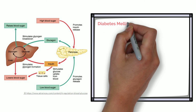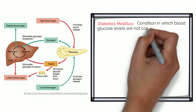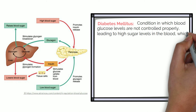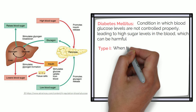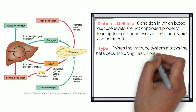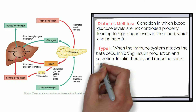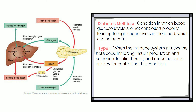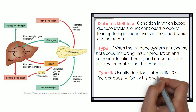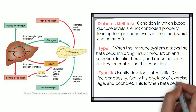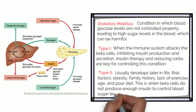Diabetes mellitus is a condition in which blood glucose levels are not controlled properly, leading to high sugar levels in the blood which can have severe impacts on the body. Type 1 is when the immune system attacks the beta cells, inhibiting insulin production and secretion; insulin therapy and reducing carbohydrates are key for controlling the condition. Type 2 usually develops later in life, with risk factors including obesity, family history, lack of exercise, age and poor diet — this is when beta cells do not produce enough insulin to control blood sugar levels.